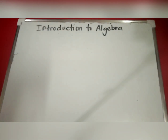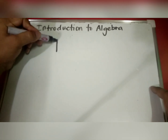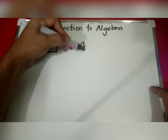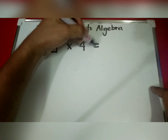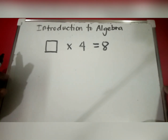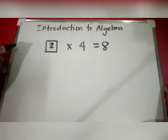Good morning students, welcome to my channel. Today I will discuss the introduction to algebra. I have a puzzle here: blank times 4 is equal to 8. What is the missing number? Very good — the missing number is 2, because 2 times 4 is equal to 8.